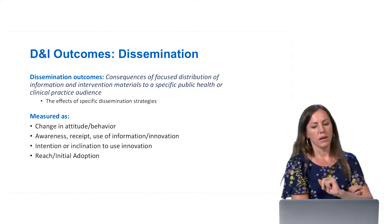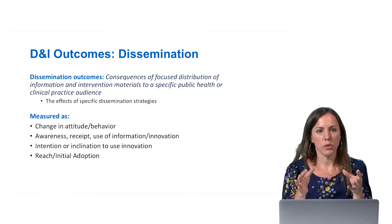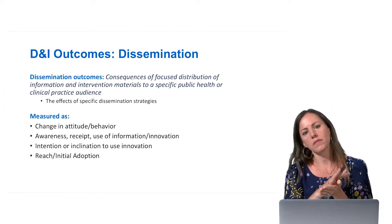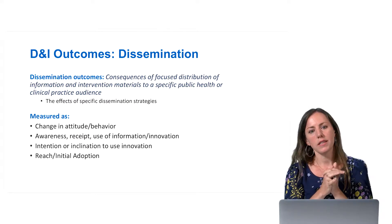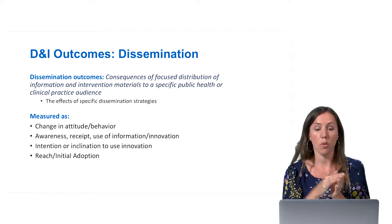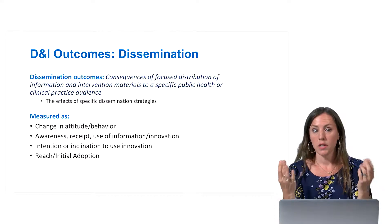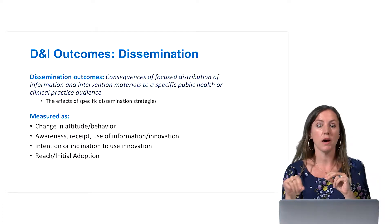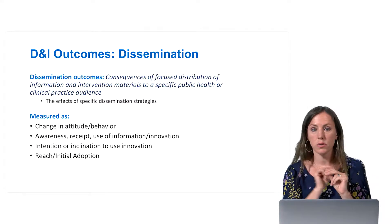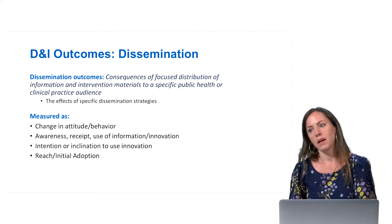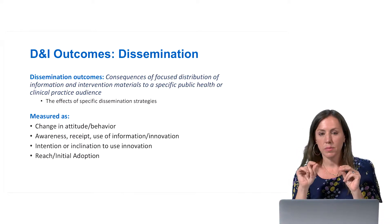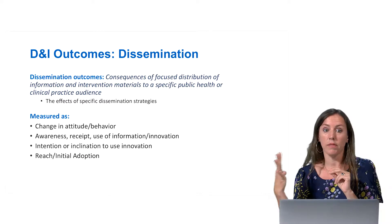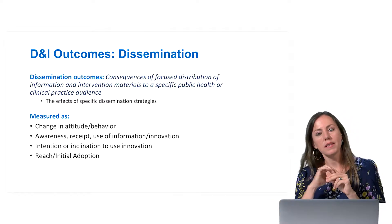Dissemination outcomes are really about the effects of this focused distribution of information or intervention materials to a specific public health or clinical practice audience. So if you had a specific dissemination strategy — maybe trying to use interpersonal communication or champions within a school district to craft dissemination messages and get all the principals on board to adopt a new HIV prevention curricula for schools in New York City — your dissemination outcome might be: does that strategy actually encourage the adoption, or the quicker or more widespread adoption, of that curriculum within the New York City school system?